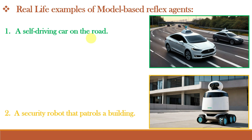Here are a few real-world examples of Model Based Reflex Agents. Imagine a self-driving car on the road — it can't see everything at once, but it remembers where other cars were a moment ago and can predict that a car behind it is likely to get closer if it just changed lanes. Another example is a security robot that patrols a building: if it hears a sound from an area it can't see, it can use its internal state to remember the last known positions of potential intruders and respond accordingly. These examples show how Model Based Agents can handle incomplete information to make better decisions.